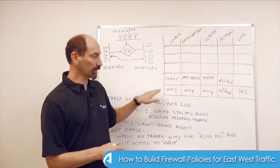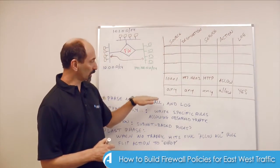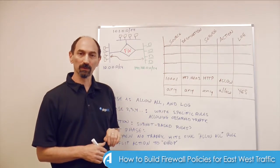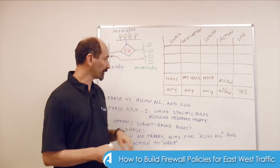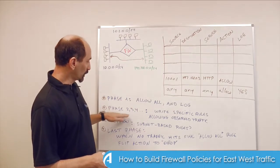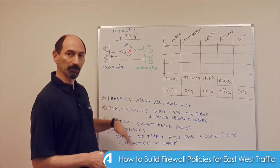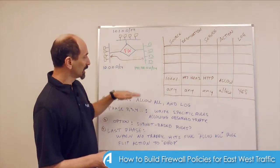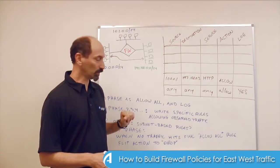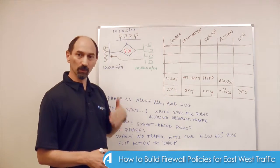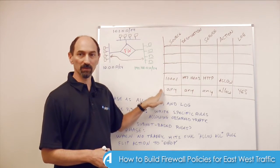Basically you're reducing the amount of logs generated by the last rule. The last rule will hit less and less traffic. As you go through this process and add more and more specific rules above the any/any/any rule, you're reducing the amount of logs that this very last rule is generating.